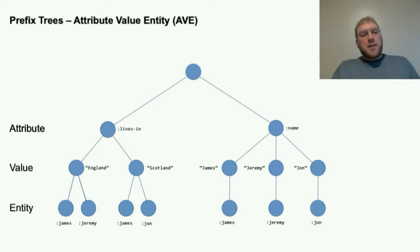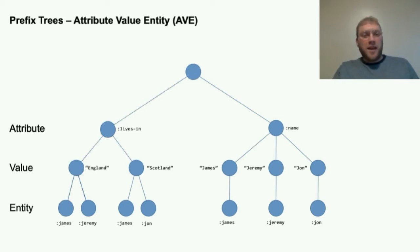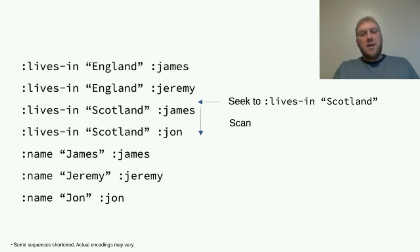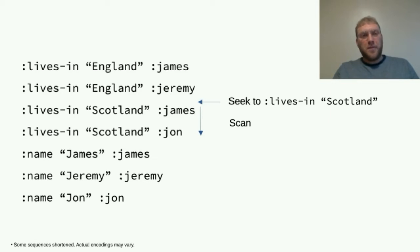As for how we store them, we store these indices as sorted prefix trees. For the value-in-hand query, we have an index sorted first by attribute, then by value, then by entity — an AVE index. In practice, we can concatenate A, V, and E into one byte array. When we search for a value, we create a byte array containing A and V, and use a byte array prefix seek to navigate through the tree to the first value after our search value. From this point, we can scan through the tree, yielding different E's for our A,V, until we hit a different prefix.